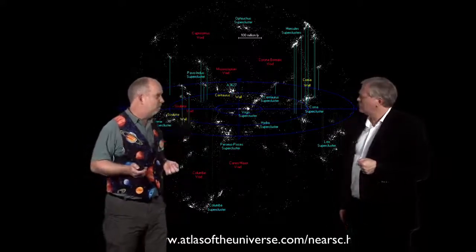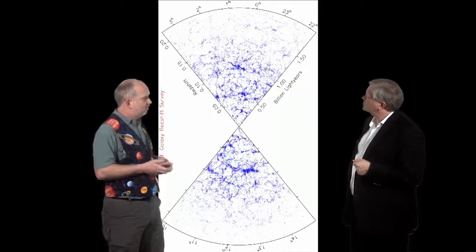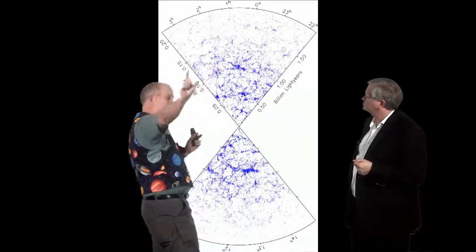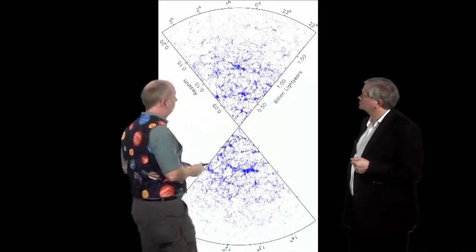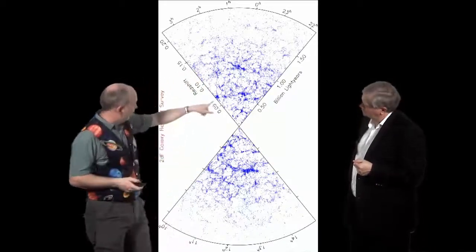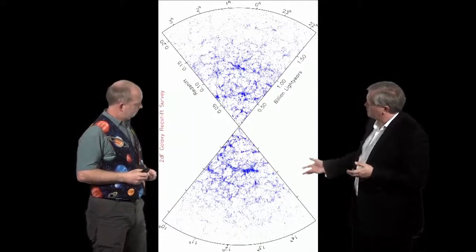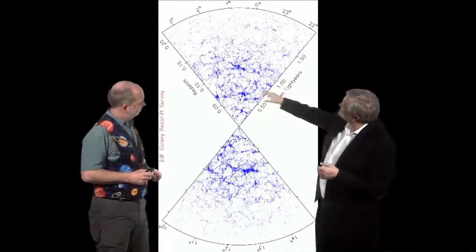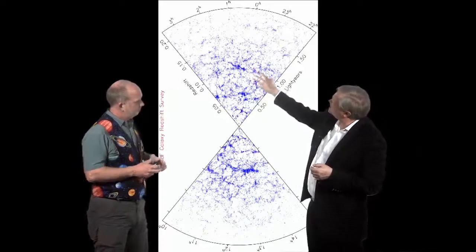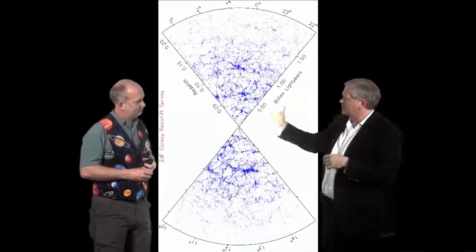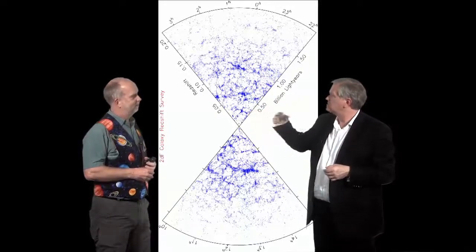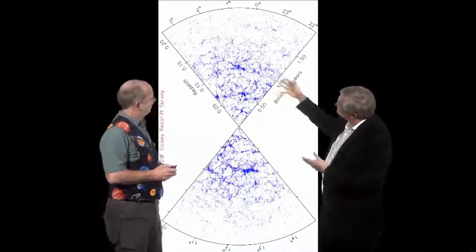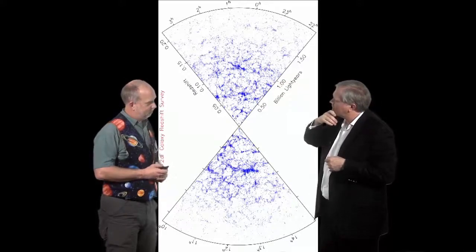But if we go to an even bigger scale, so one of the biggest maps was the 2DF galaxy redshift survey. What they did was, we are here, and they did a wedge across the sky and measured the distance to a whole bunch of galaxies, about over 200,000 of them, and each blue dot here is a galaxy. What are we seeing here? This almost kind of reminds me of the foam on a cappuccino. I see little lumps and bubbles, but it's beginning to kind of look like, when you look at a cappuccino from a long ways away, it just looks like white. So it's sort of maybe a hint that it's beginning to look like that.